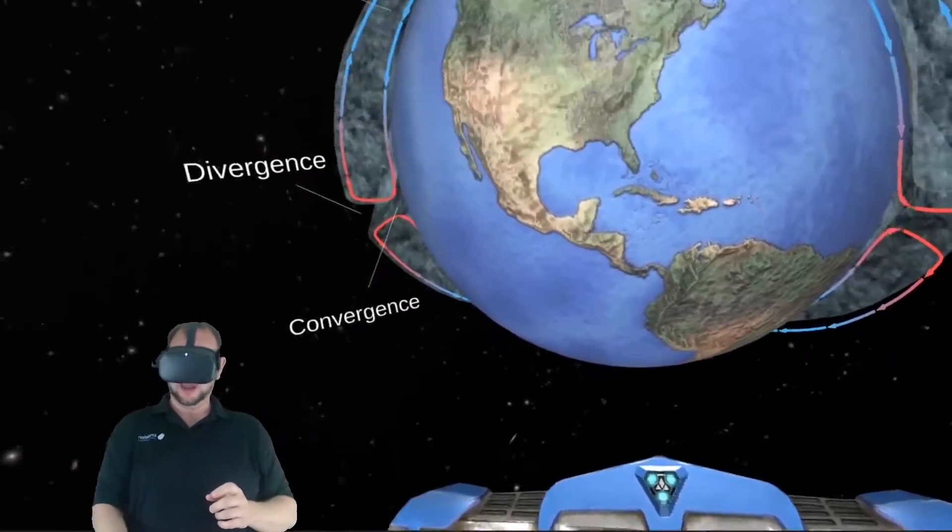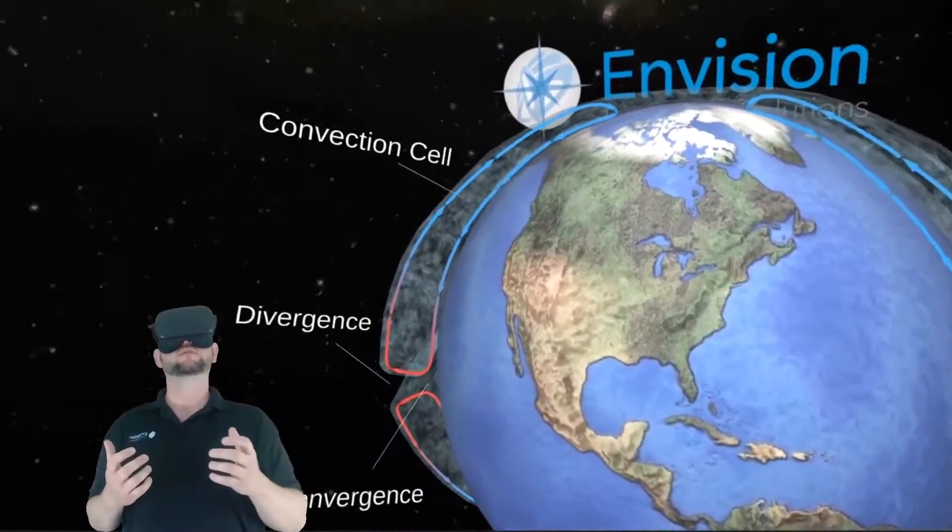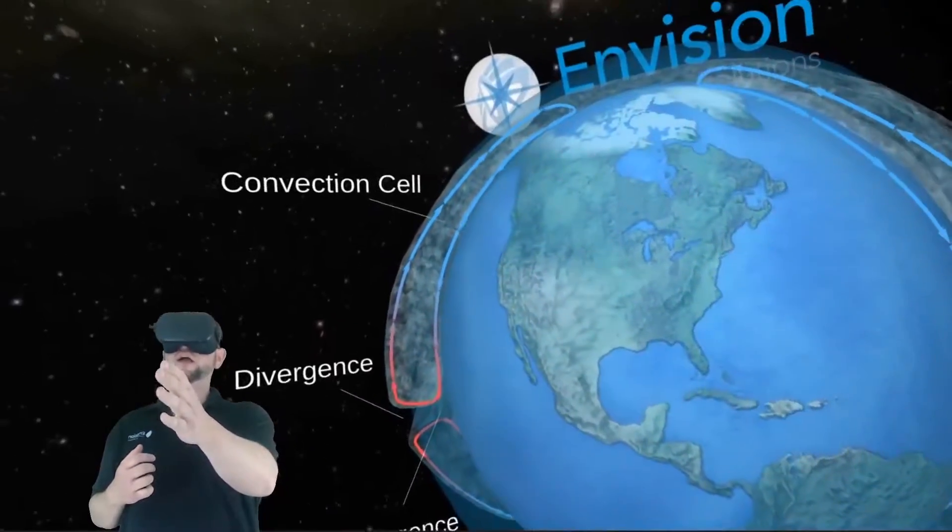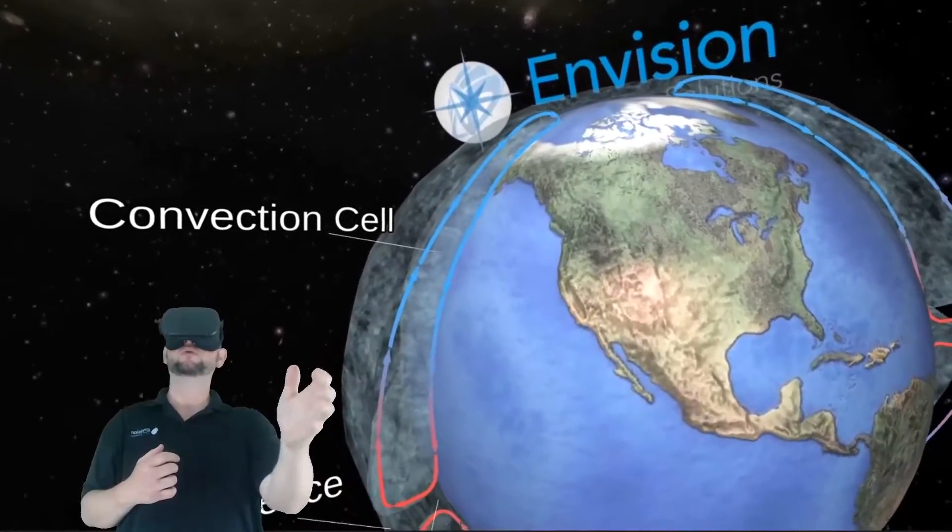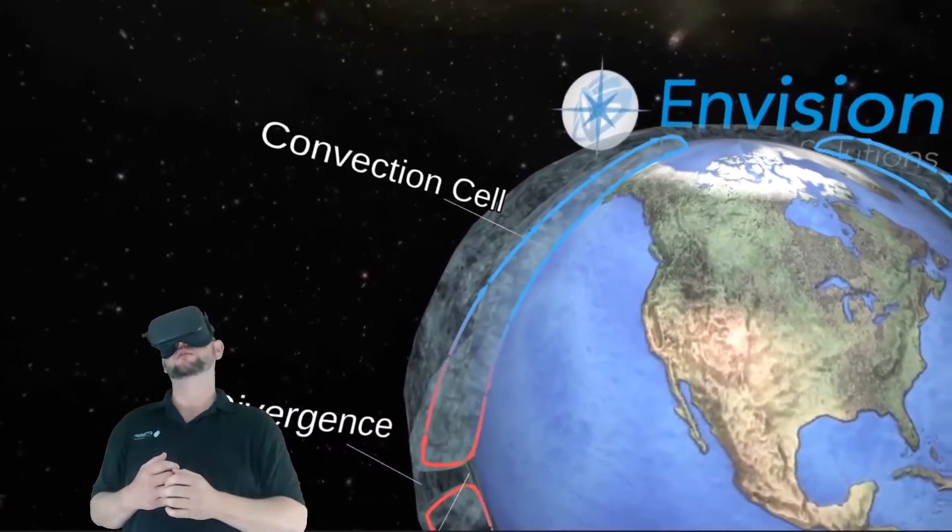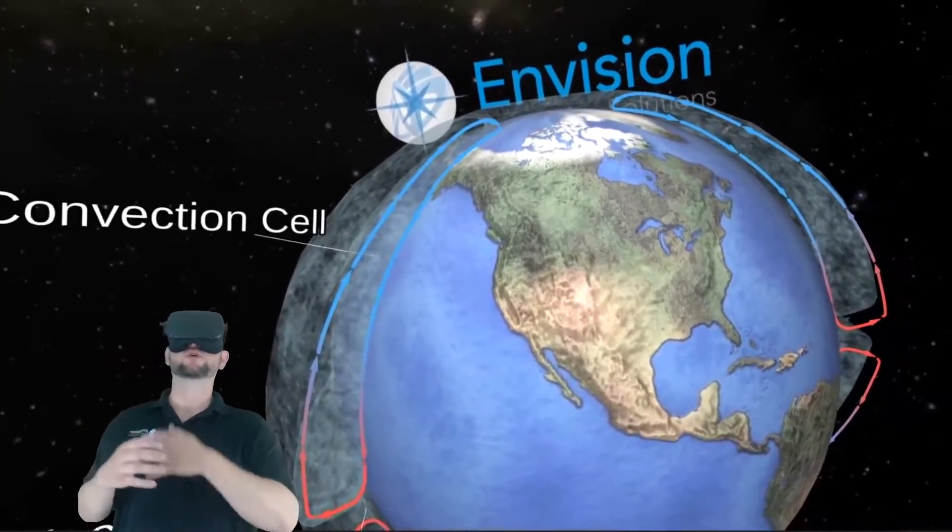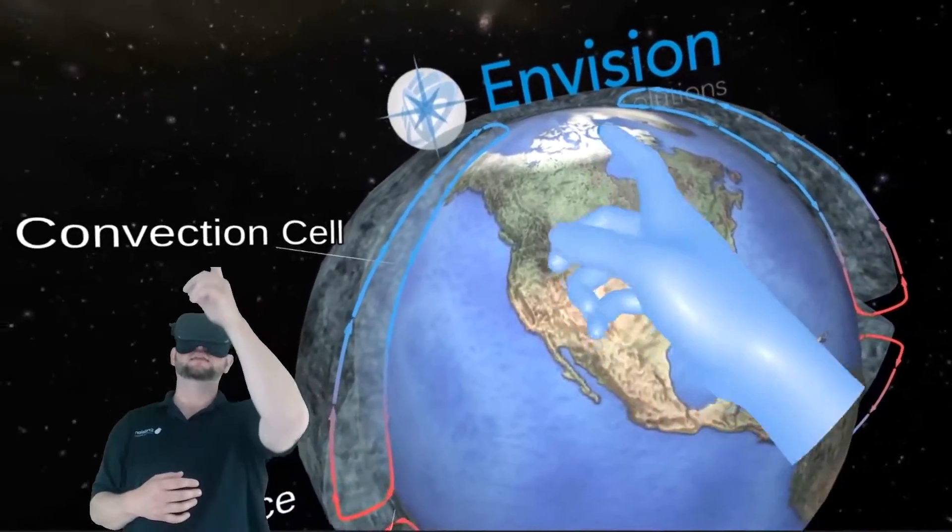We can look at general circulation of the planet. You can see how air makes its way from the polar regions down towards the equator at the lower levels before returning back to the poles at the upper levels.